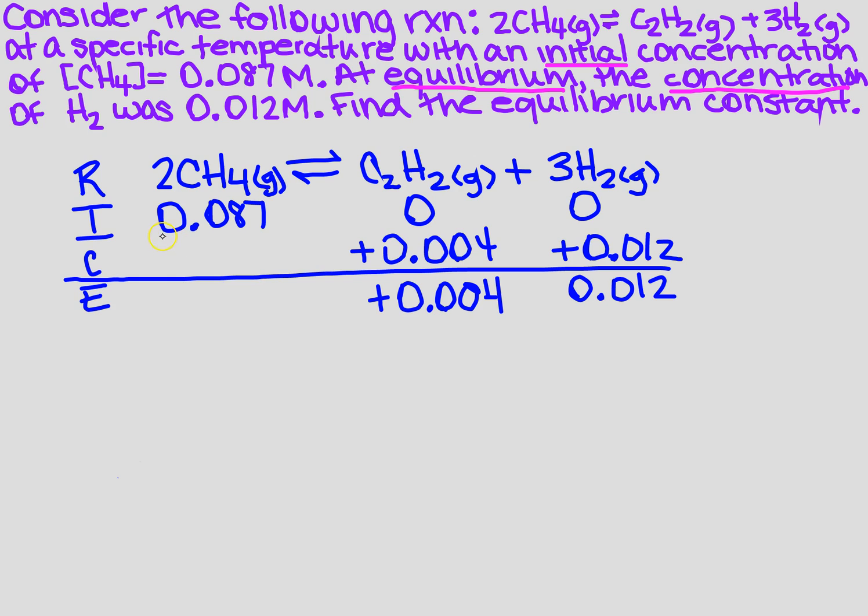So what happens over here? Same thing. I know that when I divided it by 3, I know that 1 mole is at 0.004 change. There's 2 moles on the left, so that's going to be 0.008. Now, remember, if I add on the right, I have to subtract on the other side. So I'm going to subtract those two, and I'm going to get 0.079.